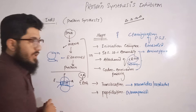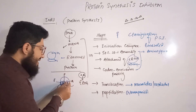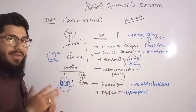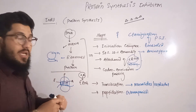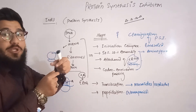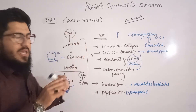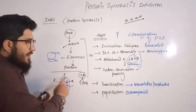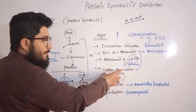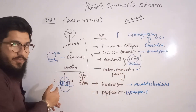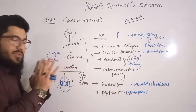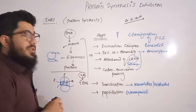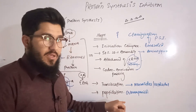After codon-anticodon pairing, translocation happens — the tRNA from the A site is translocated into the P site, and from P to E. Some texts mention this translocation refers to the transfer RNA itself, while others specify it as the transfer of the amino acids that pair up to produce the peptide. Either way, the next step after codon-anticodon pairing is translocation.